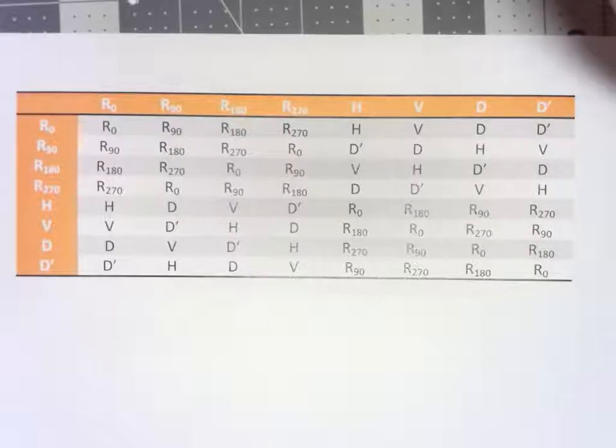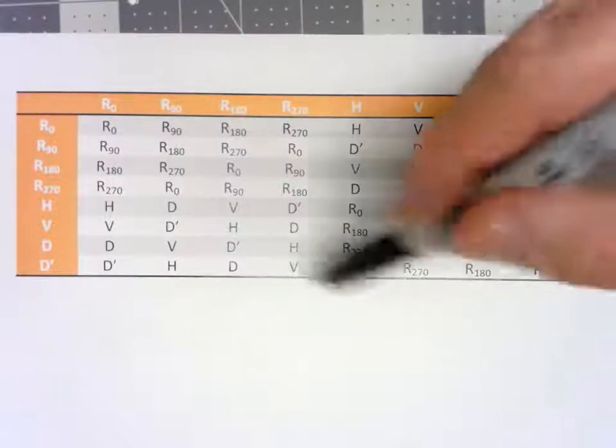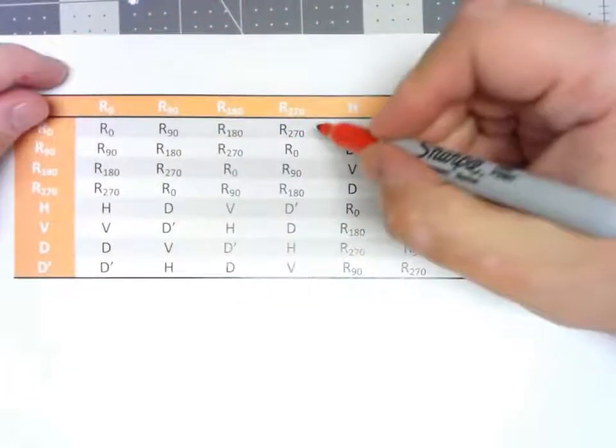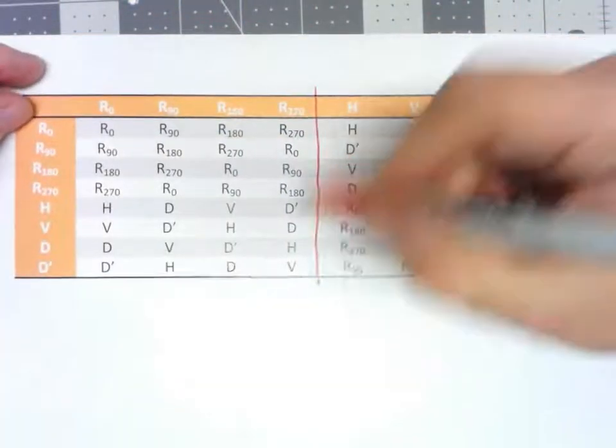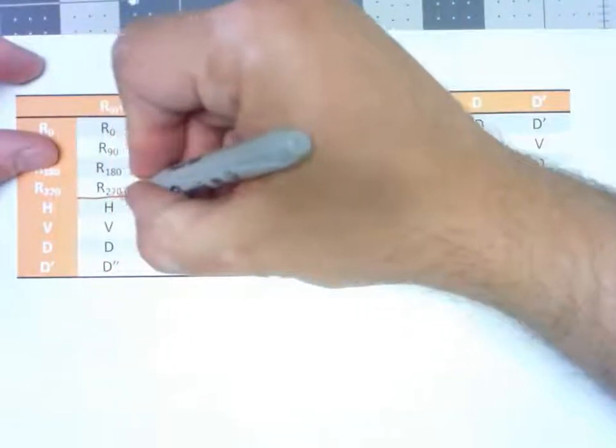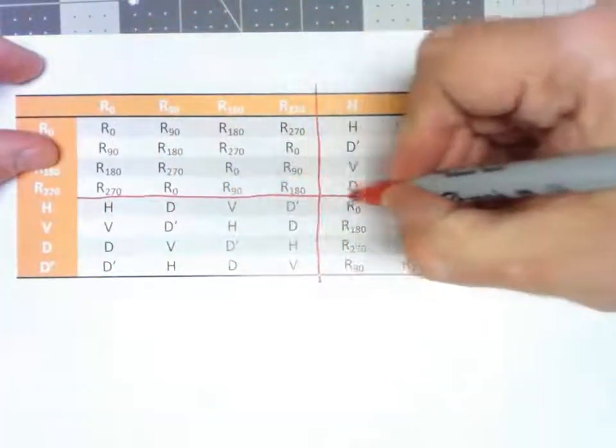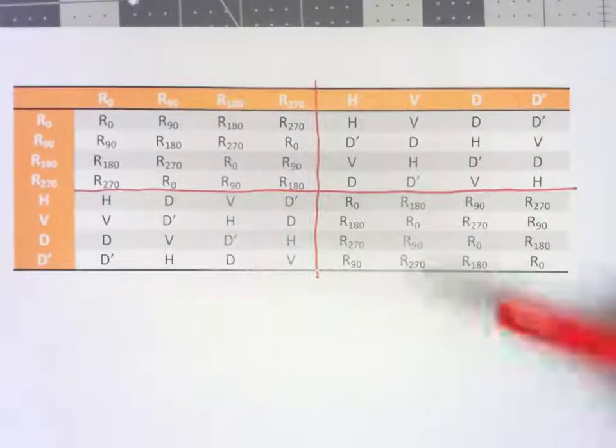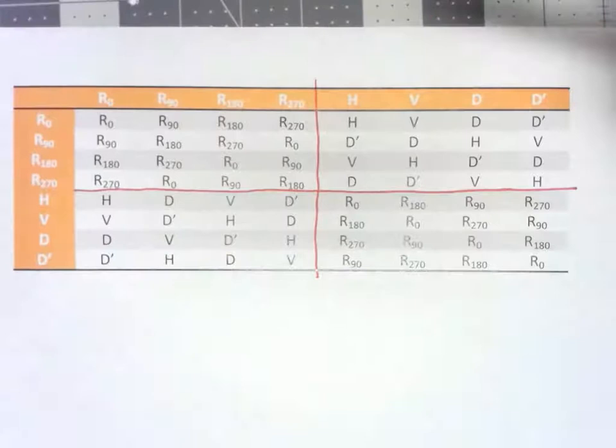More interesting though is that this table is divided up into quadrants. We can imagine drawing a line right down the middle there and across like this, and there's distinct things happening in each one of these four pieces.